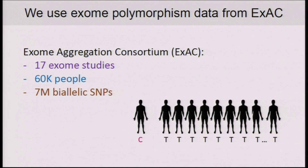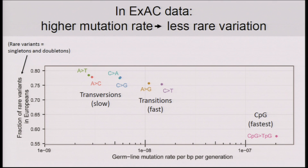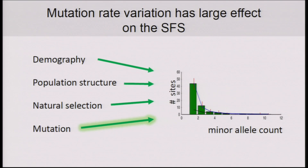To address this question, we used the largest polymorphism dataset currently available, which is the EXAC dataset. EXAC aggregated many exome studies and performed joint calling in over 60,000 individuals. What we saw in the data was a clear signature of an effect of mutation rate on the site frequency spectrum. The SFS is summarized by the fraction of rare variants — singletons or doubletons. The different data points correspond to different mononucleotide mutation types as well as CpG mutations, which in turn correspond to different rates of mutation. We can see that the higher the mutation rate, the lower the fraction of rare variants.